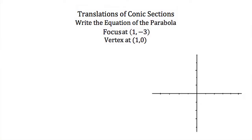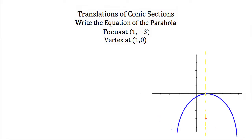Our vertex is at (1, 0) and our focus is at (1, -3). That means our axis of symmetry is vertical. Our focus is below our vertex, and that means our parabola is going to open in the negative y direction, which means it might look something like that.